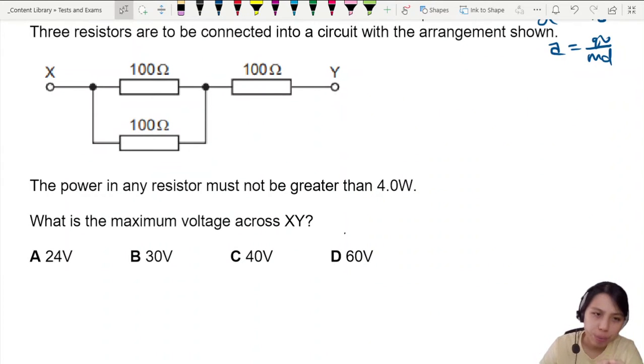Three resistors are connected to a circuit. The power in any resistor must not be greater than 4 watts. What's the maximum voltage you can connect across X, Y?